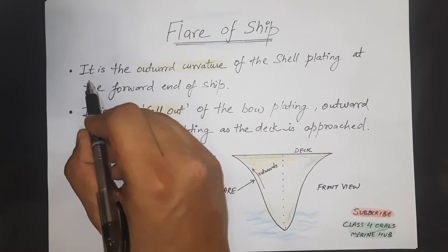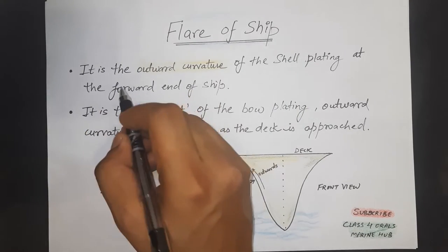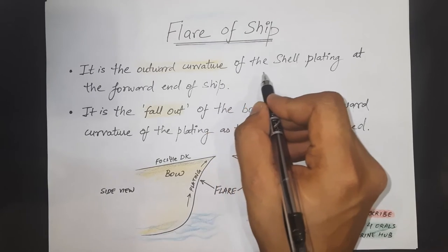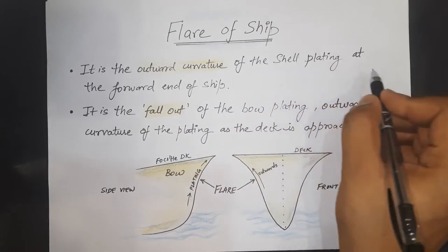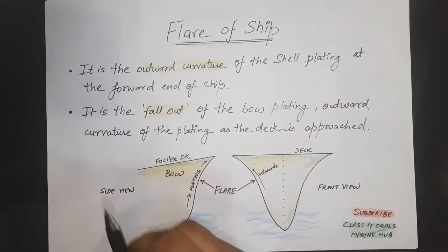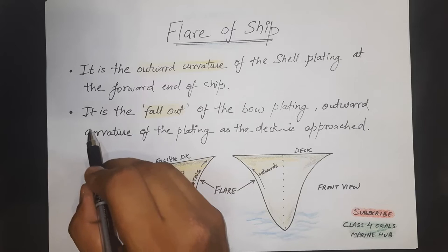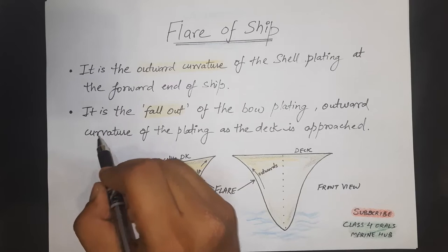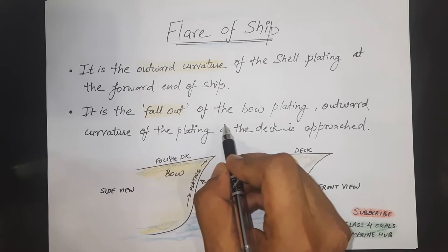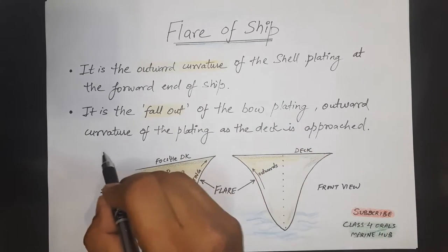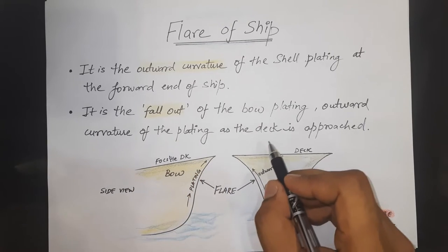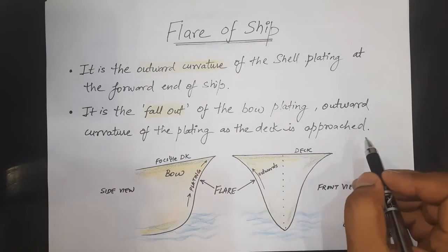By definition, the flare of the ship is the outward curvature of the shell plating at the forward end of the ship. You can also say it is the flare of the bow plating — the outward curvature of the plating as the deck is approached.